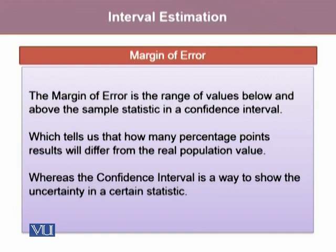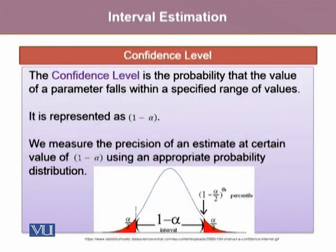Whereas the confidence interval is a way to show the uncertainty in a certain statistic. The confidence level is the probability that the value of a parameter falls within a specified range of values, which is represented by 1 minus alpha. We measure the precision of an estimate at certain value of 1 minus alpha using an appropriate probability distribution.